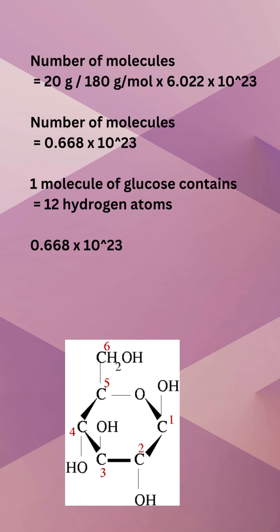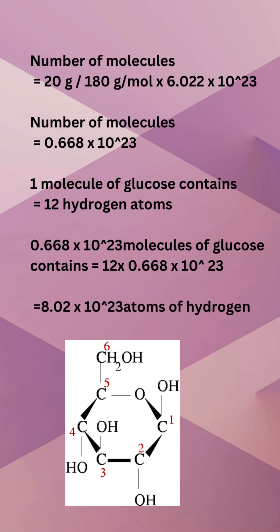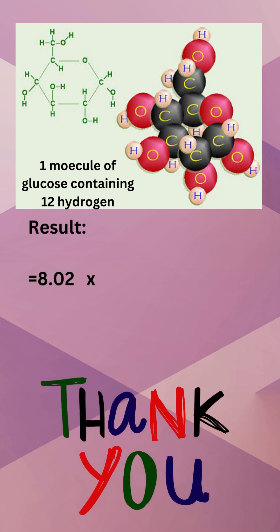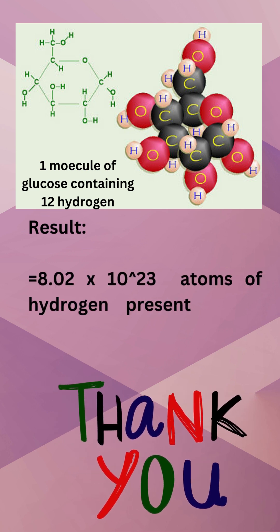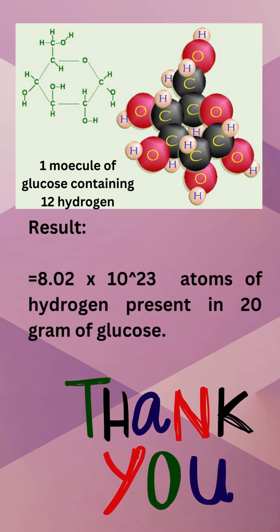One molecule of glucose contains 12 hydrogen atoms. Therefore 0.668 into 10 to the power of 23 molecules of glucose equals 12 into 0.668 into 10 to the power of 23, equals 8.02 into 10 to the power of 23 atoms of hydrogen.